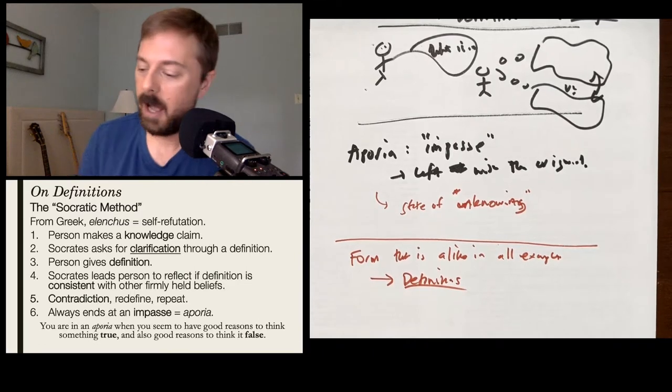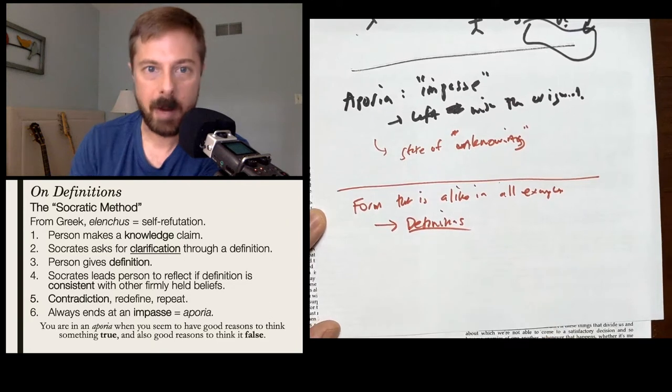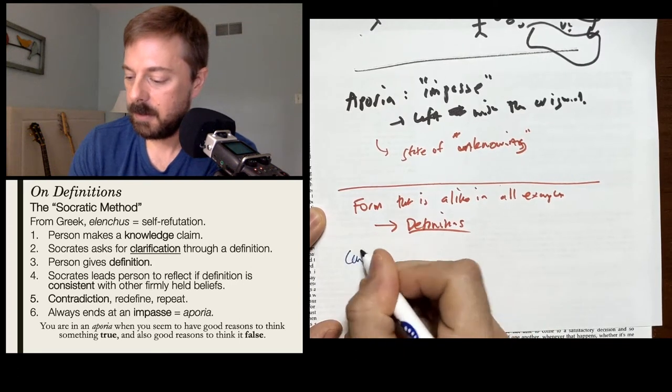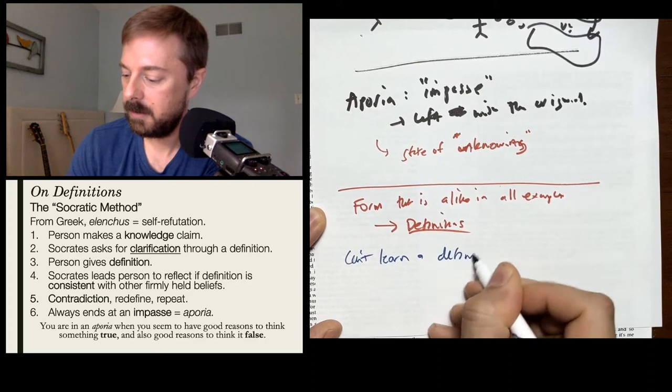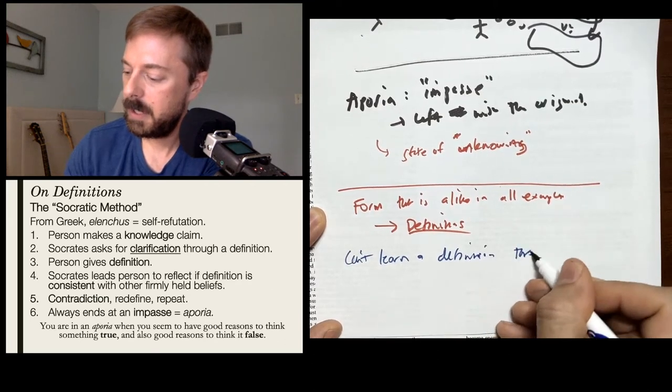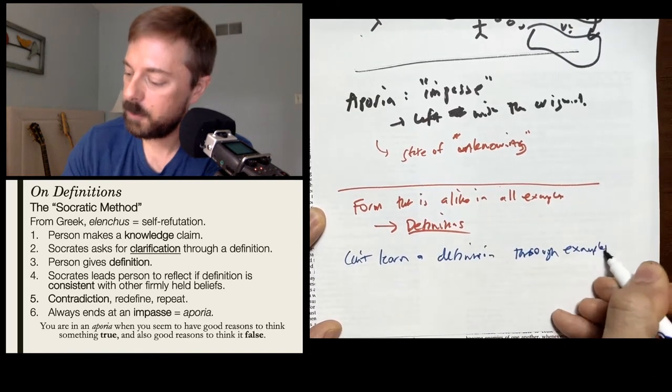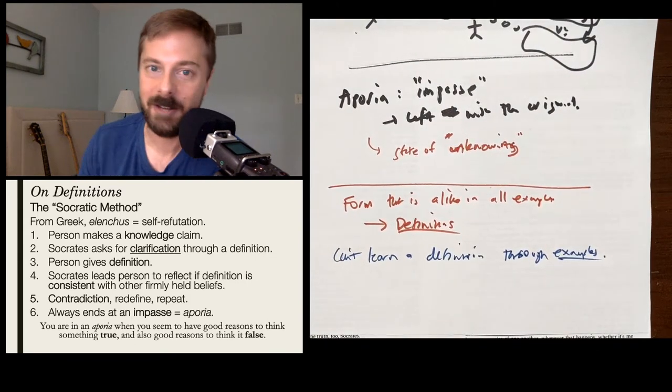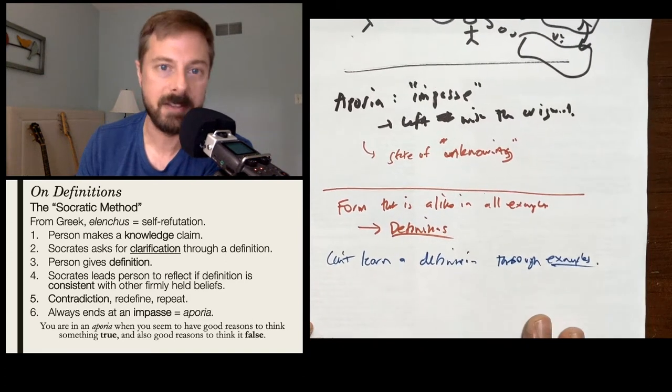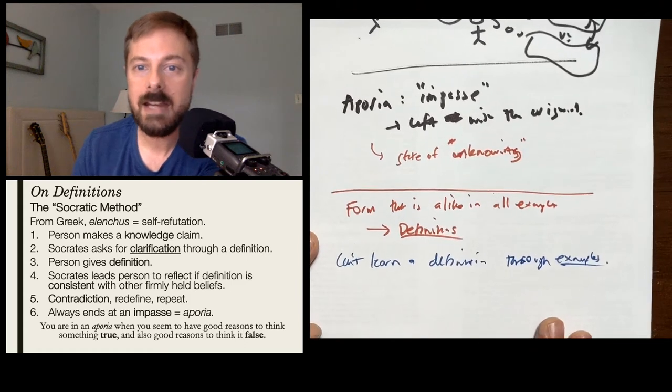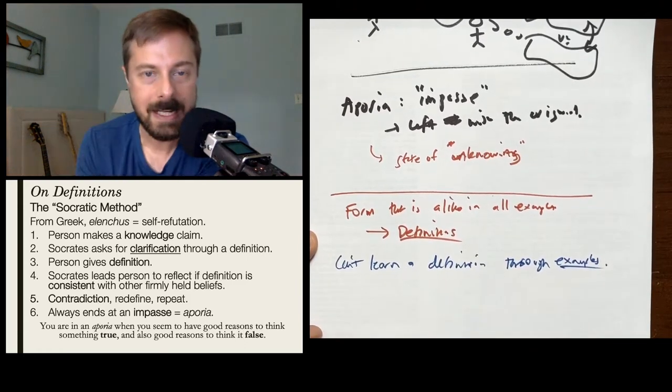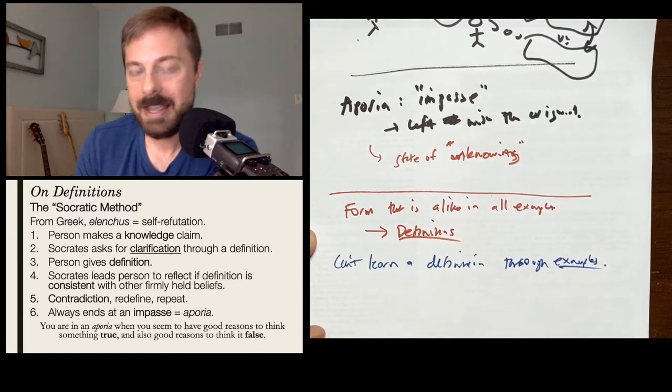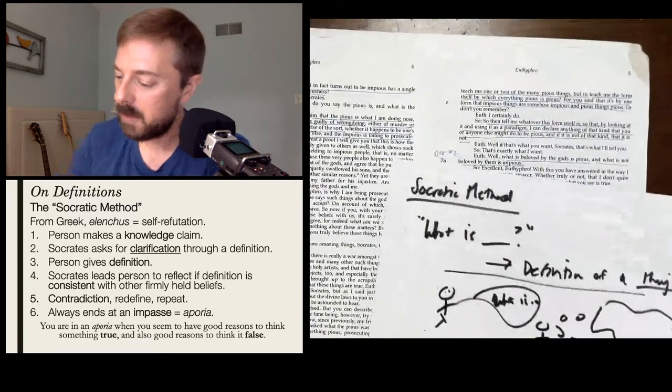Just remember how we said the priority of definitions. You can never learn a definition by looking at examples. You can't learn a definition through examples. Now this is really problematic, but if you can't learn what a definition is through examples, how the heck are you going to learn what the definition is? But Socrates says, you can't learn through examples. Don't just show me an example of piety and say, from that example, I should know what piety is. You need to tell me the form, the intellectual idea that cuts across all the examples.